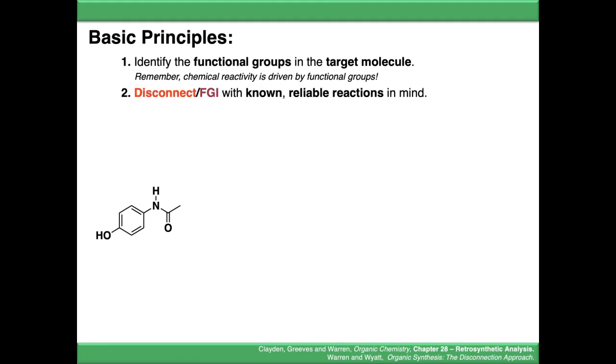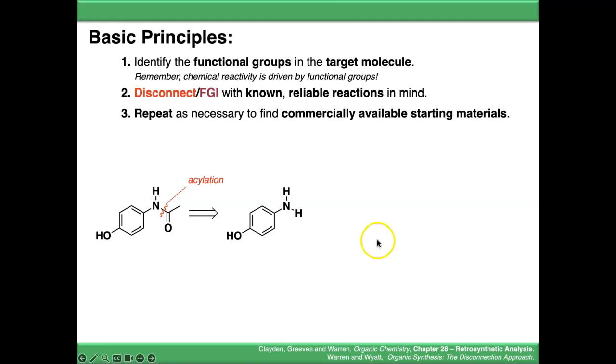We disconnect or do functional group interconversions with known reliable reactions in mind. I'm going to disconnect here. That corresponds to an acylation reaction. That gets us back to this amine intermediate. We repeat as necessary until we find commercially available starting materials.